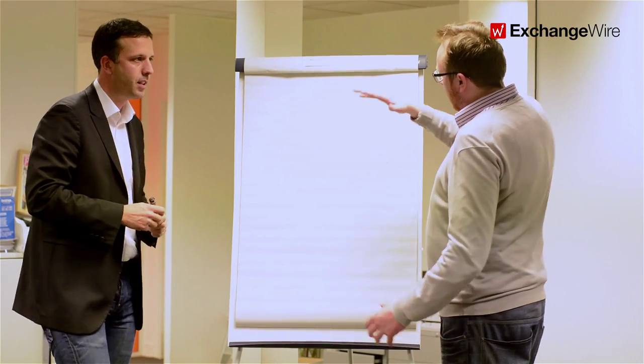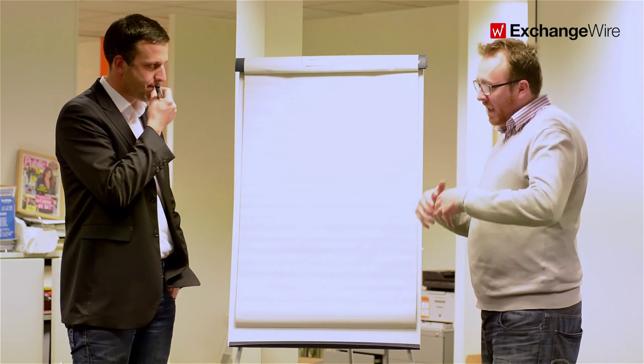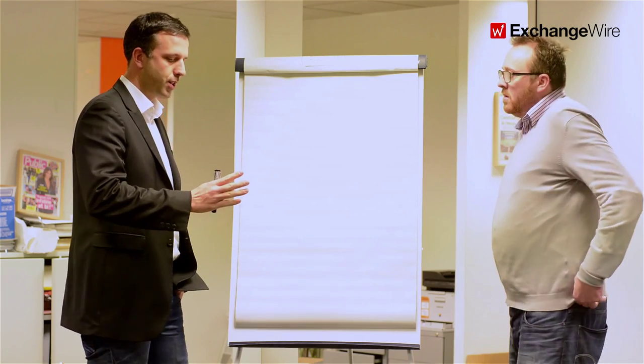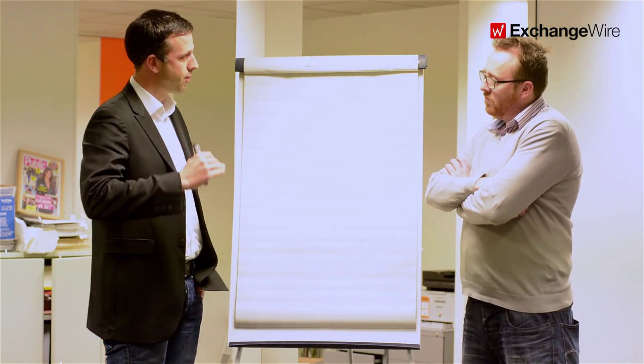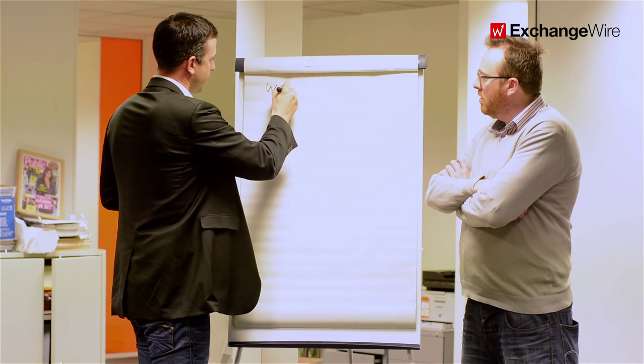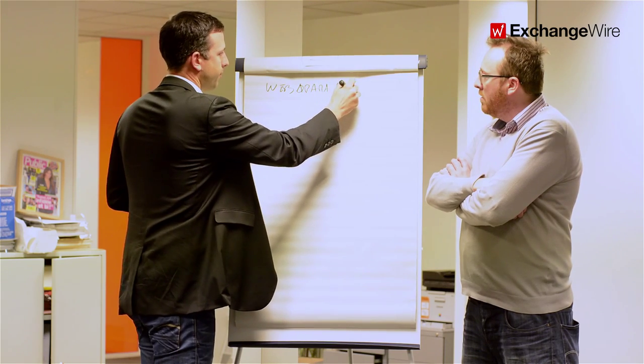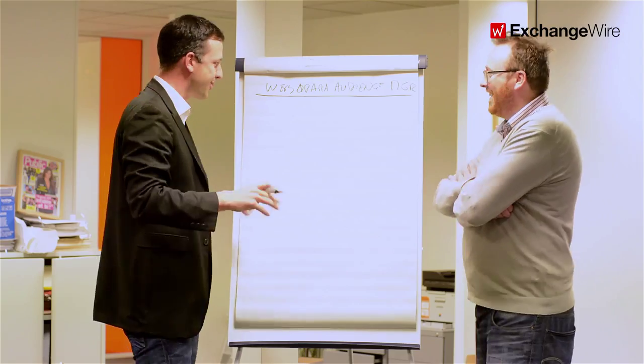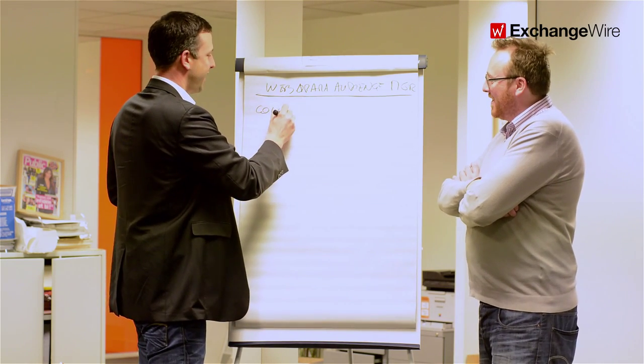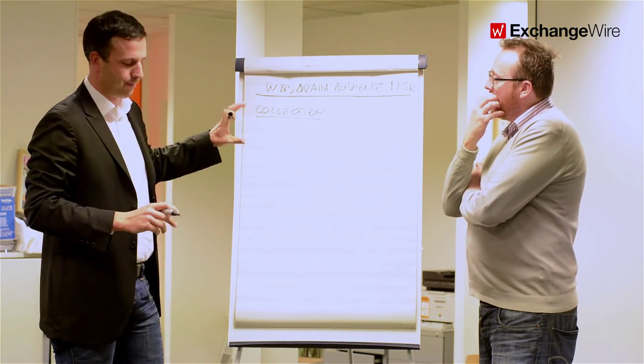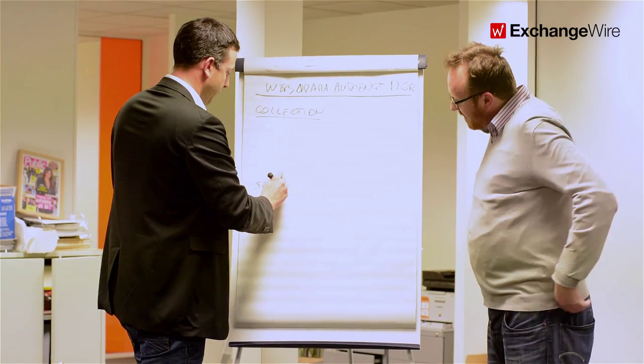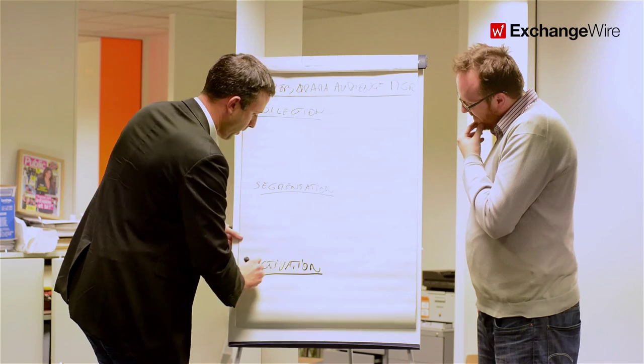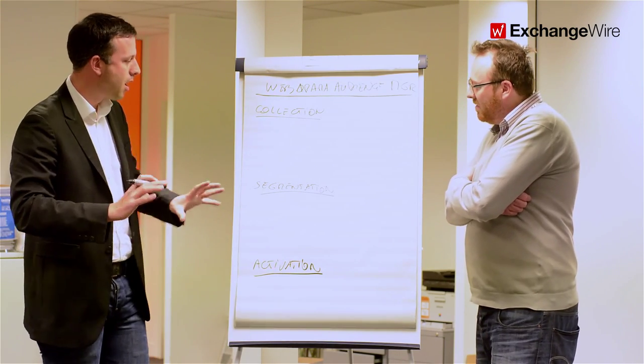Let's map that out then. I'd like to know, lots to talk about DMP and its importance in the ad stack now. But how does it integrate with the overall data strategy of an advertiser? Where does it fit in and how does it work? So when we approach a DMP project with one of our clients, there are really three layers that we're looking at. So Webarama Audience Manager is the name of our platform. So the first thing we're going to look at and work on is data collection. Then there will be a segmentation layer. And the last part, but maybe the most important one, is the activation piece. So those are really the three building blocks of a DMP and a DMP strategy.